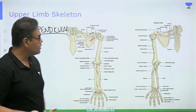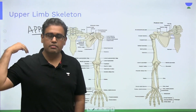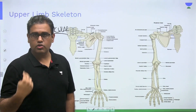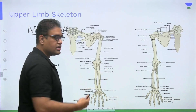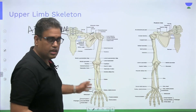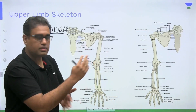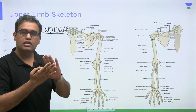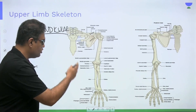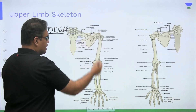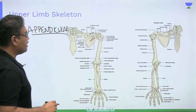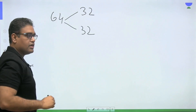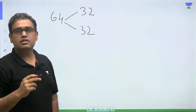The bones of the upper limb: clavicle in front, scapula in the back — part of the shoulder girdle. Then the humerus, the bone of the arm from shoulder joint to elbow joint. From elbow to wrist — the forearm — we have the radius and the ulna; radius is lateral, ulna is medial. Then we have 8 carpals in adults, 5 metacarpals, and 14 phalanges. There are around 32 bones in each upper limb, totaling 64 bones in both upper limbs.